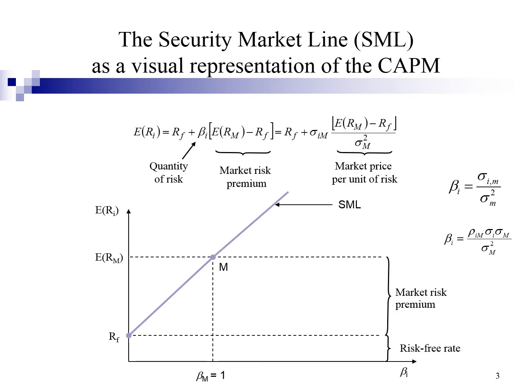The security market line is a visual representation of the CAPM. It is the graphical representation of the expected return and beta relationship. From the figure, you can see that the x-axis represents beta and the y-axis is the expected return. The security market line is a straight line intersecting the vertical axis at the risk-free rate. It is an outward sloping line begins at risk-free rate and rise to market expected return when the beta is one.